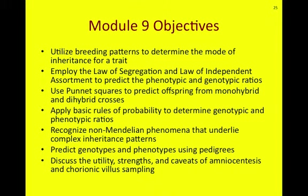The Module 9 objectives are: one, to utilize breeding patterns to determine the mode of inheritance for a trait; two, to employ the law of segregation and law of independent assortment to predict phenotypic and genotypic ratios; three, to use Punnett squares to predict offspring from monohybrid and dihybrid crosses; four, to apply the basic rules of probability to determine genotypic and phenotypic ratios; and five, to recognize non-Mendelian phenomena that underlie complex inheritance patterns.